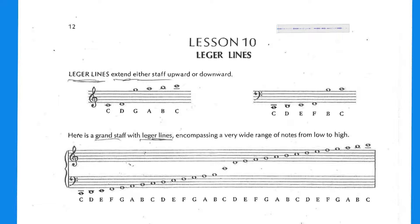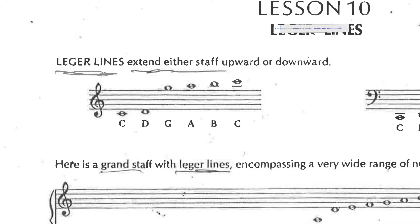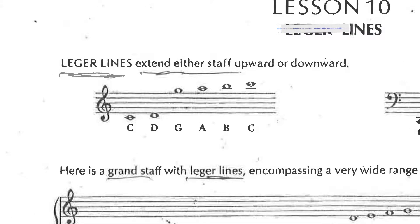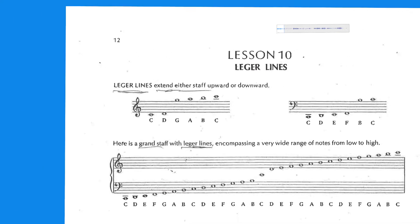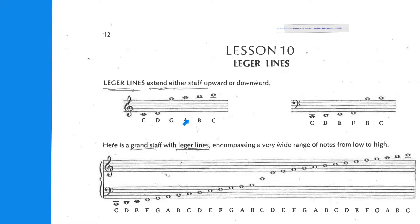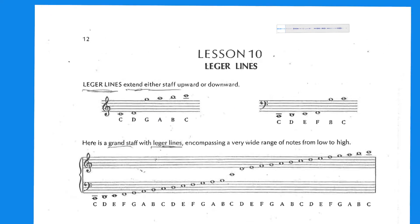All right, lesson ten: Ledger Lines. So what do Ledger Lines do? Well, Ledger Lines extend either the staff upward or downward. It doesn't matter which kind of staff it is — it could be treble clef, could be bass clef, could be any clef because it really doesn't matter.